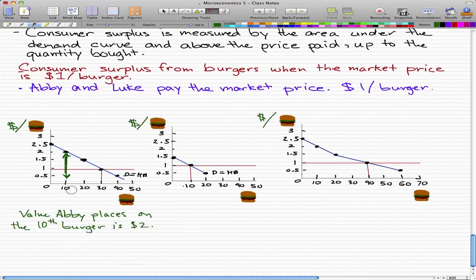Abby's consumer surplus from the 10th burger is the value minus the price, which is $1. The 10th burger which Abby will pay $2 for, she can now get at $1.